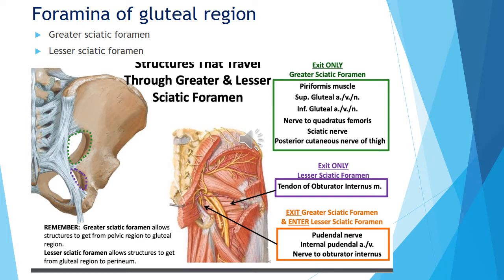In the gluteal region, we are going to talk about the foramina: the greater sciatic foramen and the lesser sciatic foramen. The hip bone has the greater sciatic notch and the lesser sciatic notch.